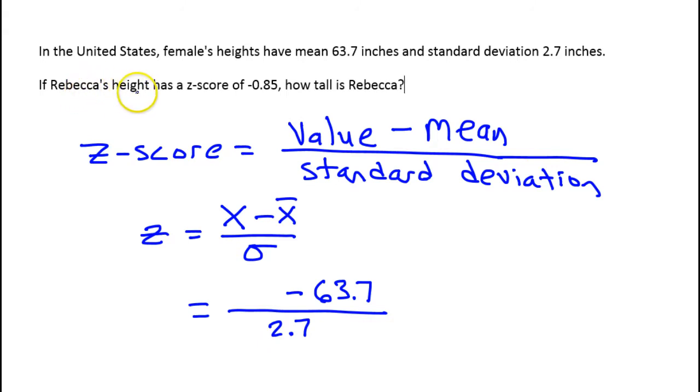The z-score of Rebecca's height is negative 0.85. So the z-score goes here, so negative 0.85. All we're missing is the value, the individual value. And that is what we are being asked to find. How tall is Rebecca? Rebecca's height is this specific value, and that's what we're being asked to find.